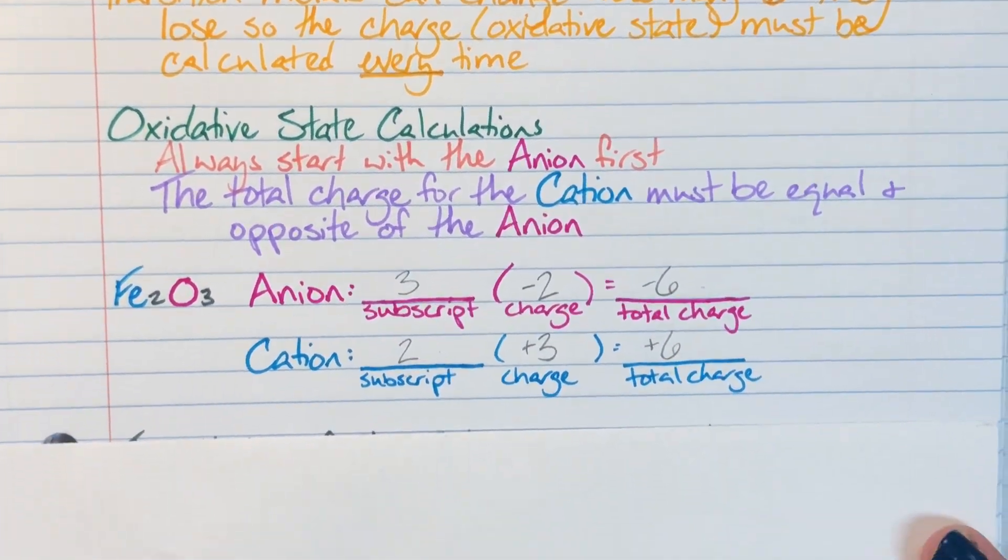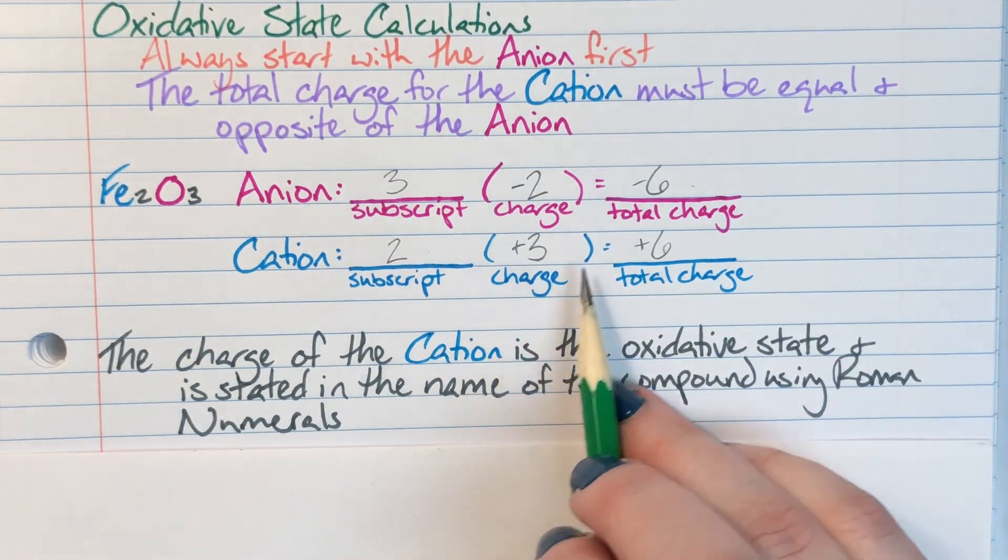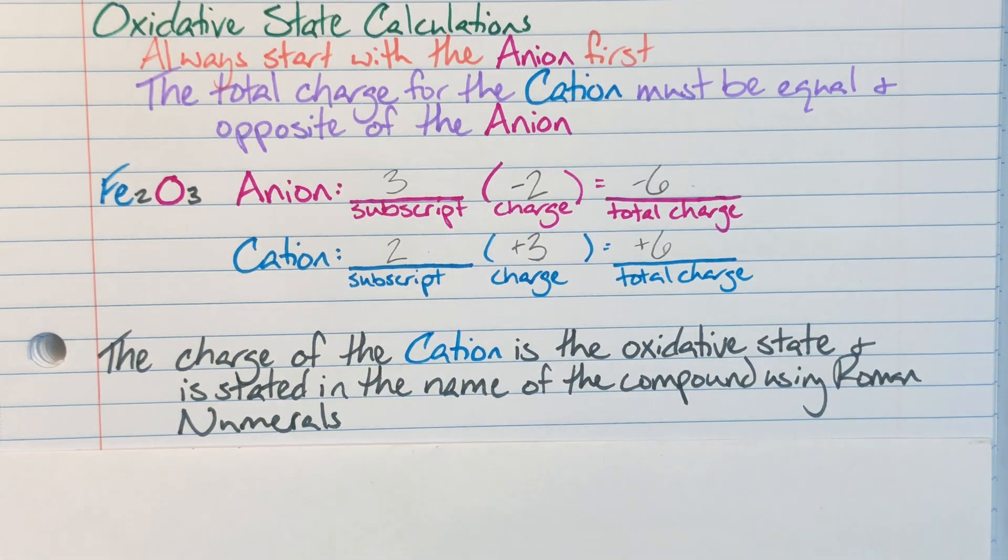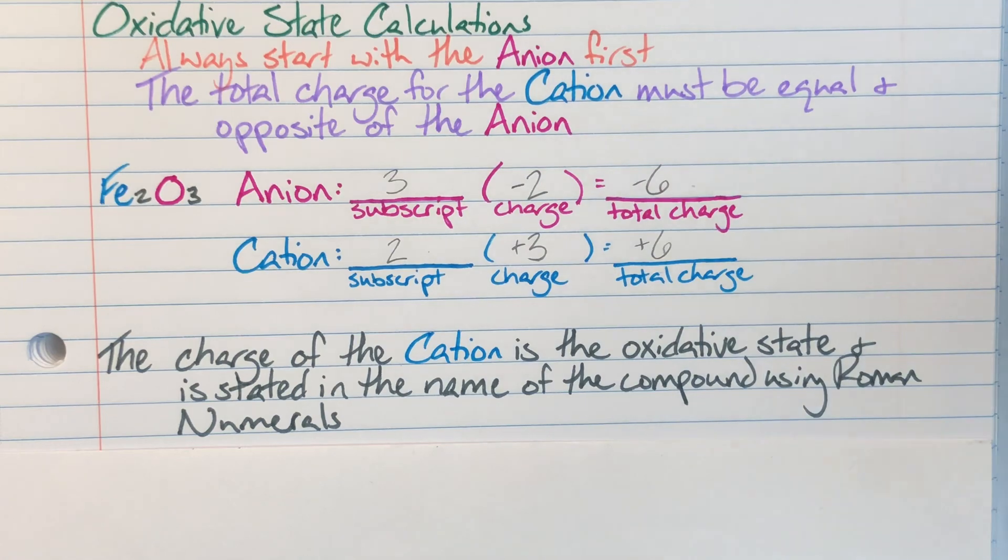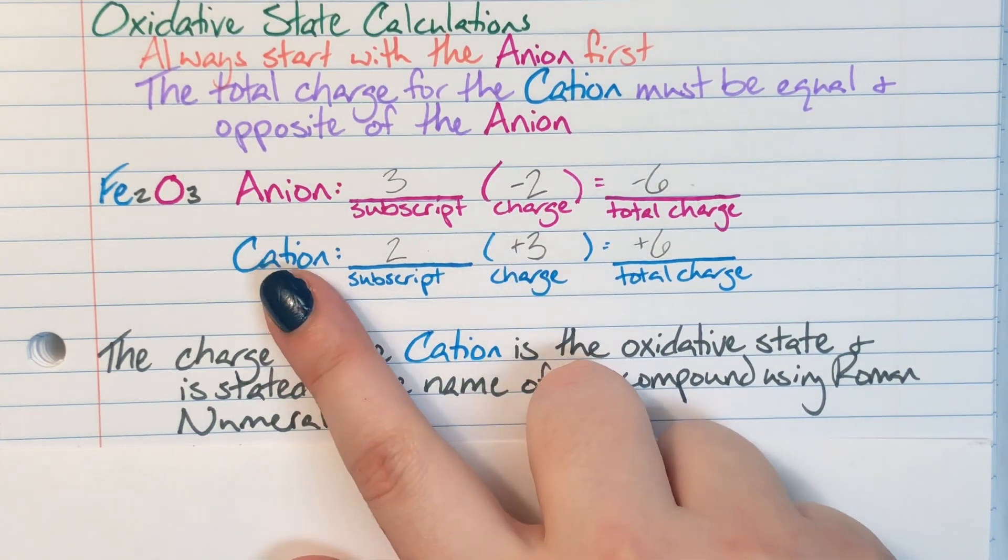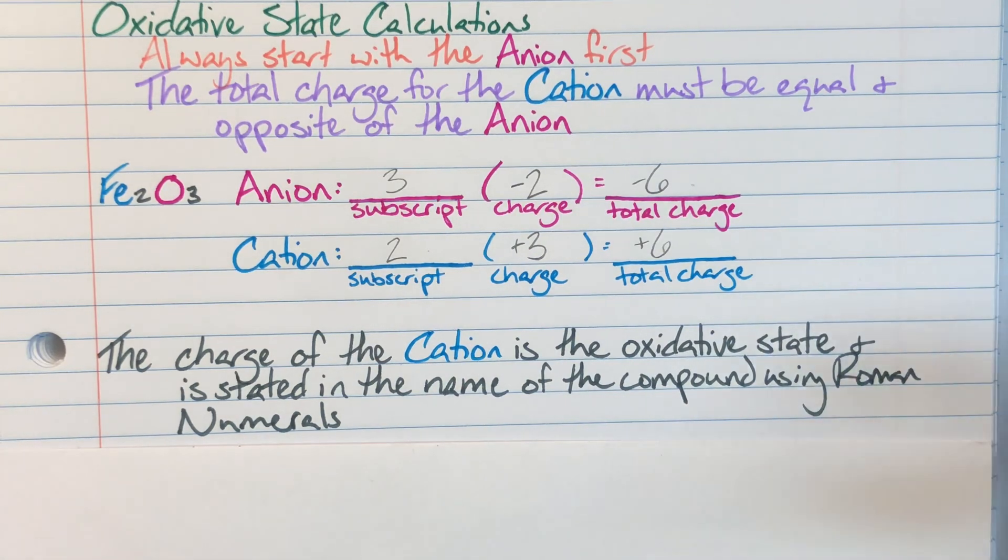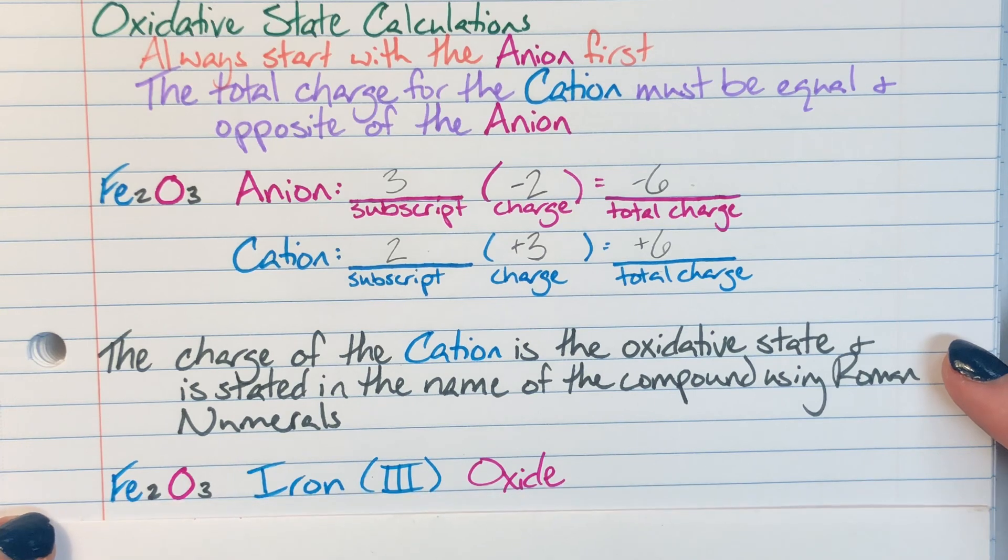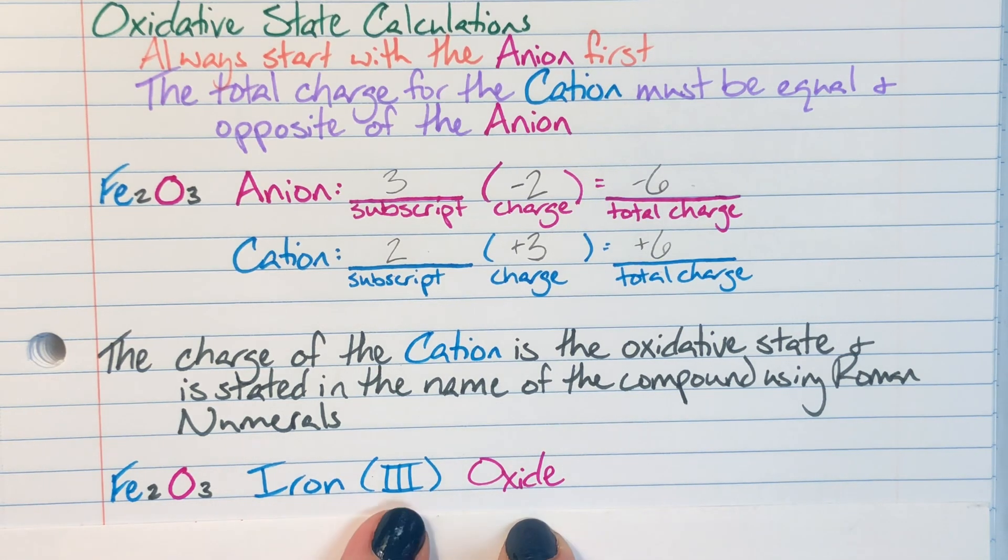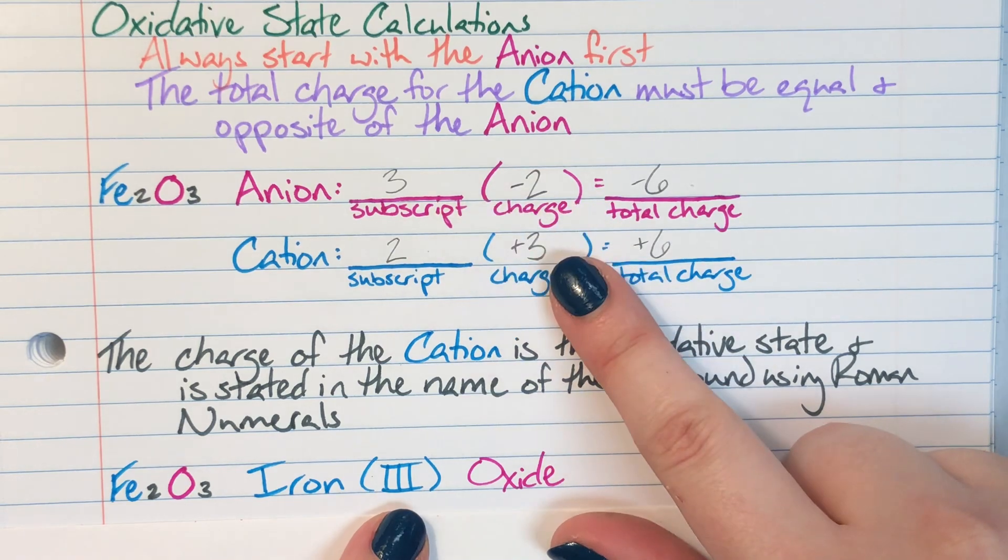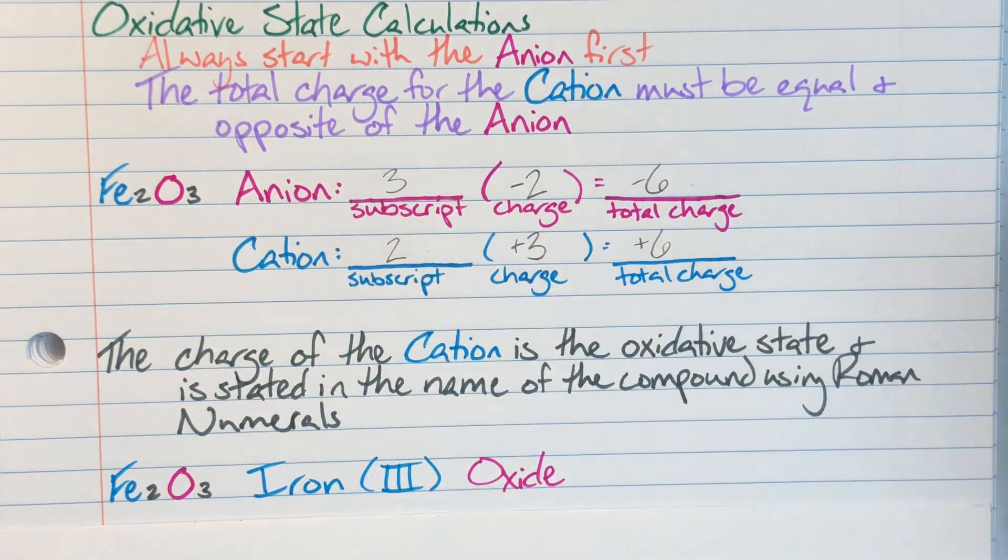Now that I have that information, I can go ahead and use it. Now my charge here, the one that is in parentheses, that is going to be my oxidative state for my cation. And since I am not actually sure what version of iron I'm going to have in any particular instance, I have to tell you which version of iron you're dealing with. And I'm going to do that by stating the charge of my cation using Roman numerals in the actual name of the compound. That means that Fe2O3 is going to become iron three oxide. That three is the same three here. I went from Arabic numerals to Roman numerals. And it's just iron with a charge of three bonded with oxide. Iron three oxide.